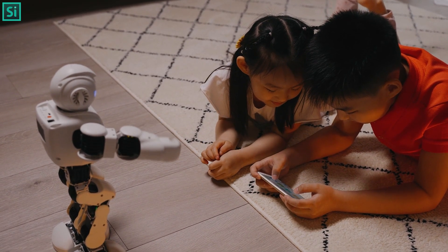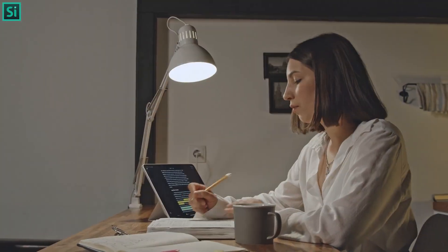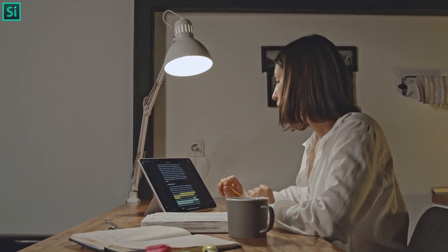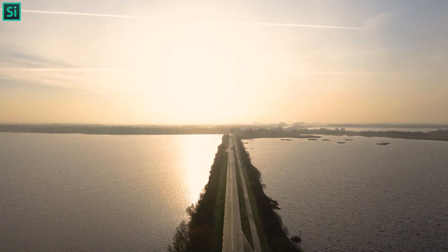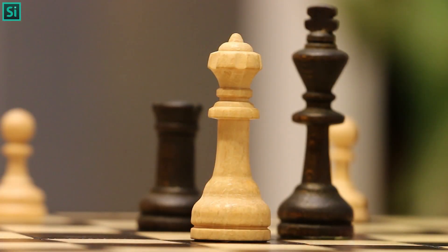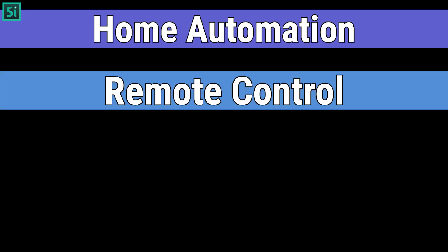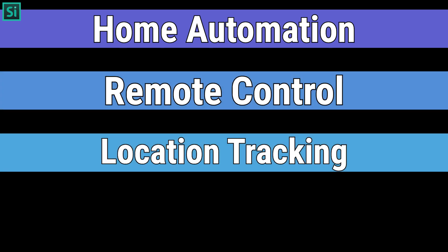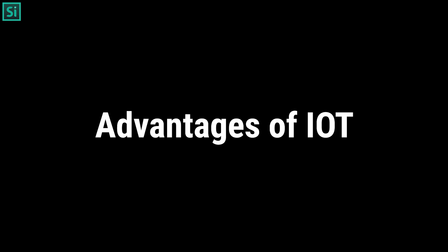With the Internet of Things, we are able to connect our devices to the internet and control them remotely, allowing us to have a more efficient lifestyle. The benefits of IoT devices are endless. Some of the most popular ones include home automation, remote control, location tracking, and security.